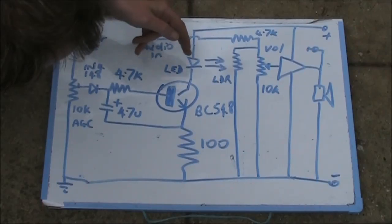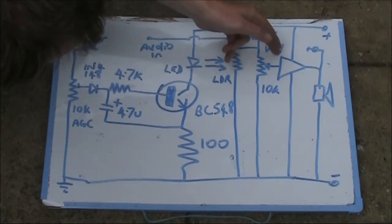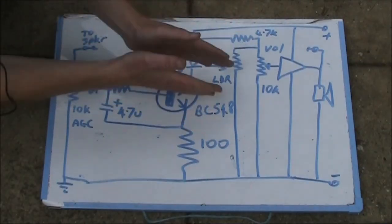When the transistor is switched on, the LED shines. That applies light to the light dependent resistor, which, as I mentioned before, reduces the gain of the audio stage, thus providing an audio compression effect.